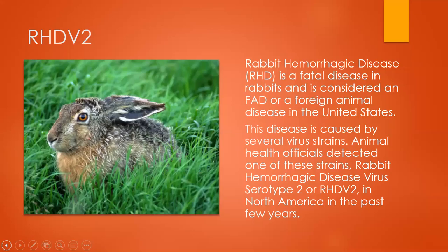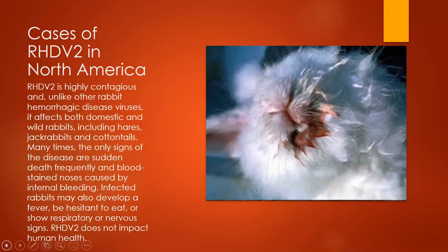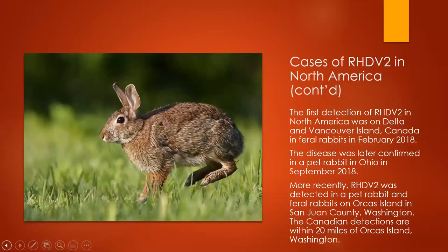Rabbit hemorrhagic disease, or RHD, is a fatal disease in rabbits and is considered an FAD, or foreign animal disease, in the United States. This disease is caused by several virus strains. Animal health officials detected one of these strains, the rabbit hemorrhagic disease virus serotype 2 or RHDV-2, in North America within the past few years. RHDV-2 is highly contagious and, unlike other rabbit hemorrhagic disease viruses, it affects both domestic and wild rabbits, including hares, jackrabbits, and cottontails. The only signs of the disease are often sudden death and blood-stained noses caused by internal bleeding. Infected rabbits may also develop a fever, loss of appetite, or show respiratory or nervous signs. RHDV-2 at this point does not impact human health.